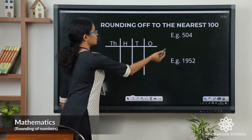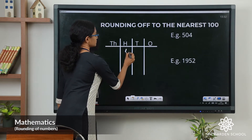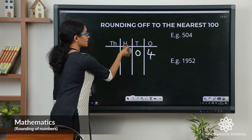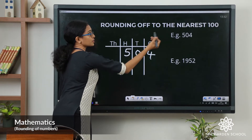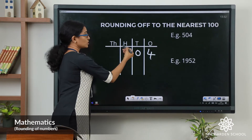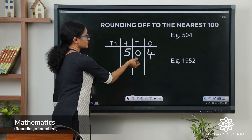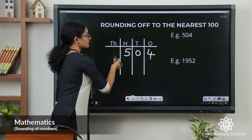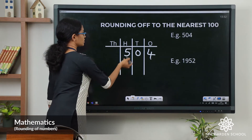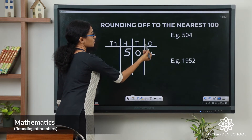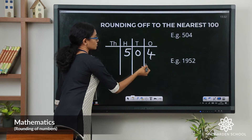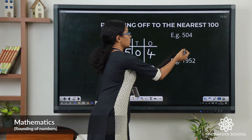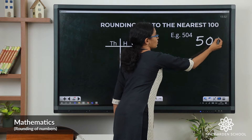Let us see examples. Look at this number 504. Let us change 504 to the nearest 100. Here the rounding digit is the hundreds digit. So we have to check the digit to the right of the rounding digit, which is the tens place. Here in the tens place the number is 0, so the number in the hundreds place will not change. The digits in the tens and ones place will both be changed to 0. So 504 rounded to the nearest 100 will give you 500.